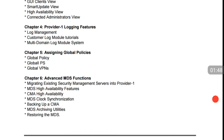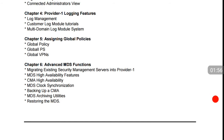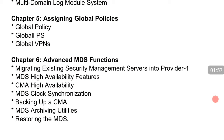The fifth chapter is assigning global policies — logging global policies to VPN and how you will install that. The sixth chapter is advanced MTS functions, covering CMA high availability, MTS high availability — which is really very important because HA is very important nowadays. If one device goes down, you need an alternative. Also covered are MDS clock synchronization, backing up a CMA, MDS archiving utilities, and restoring the MDS.